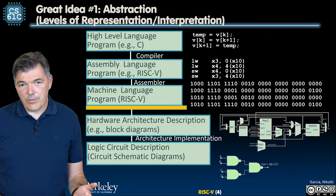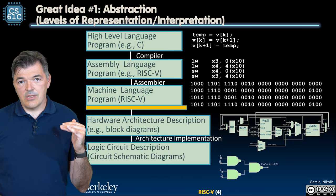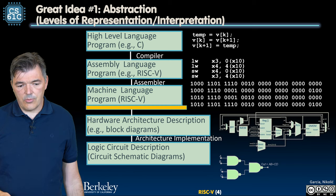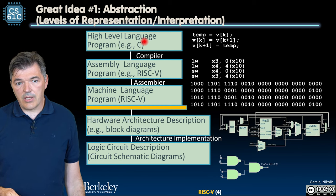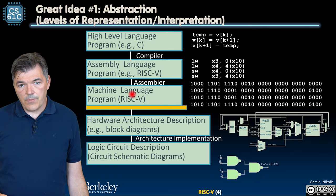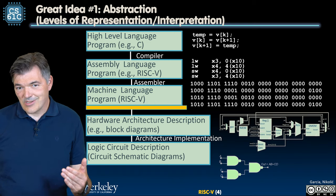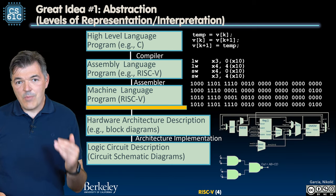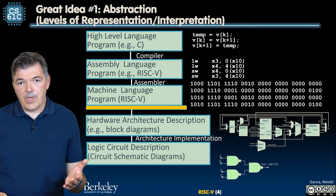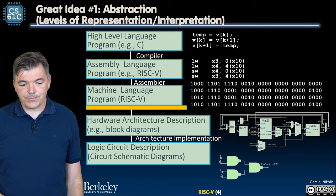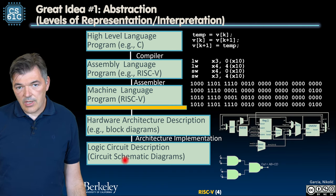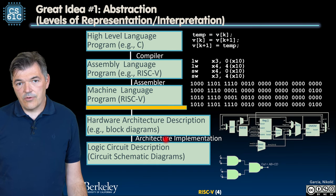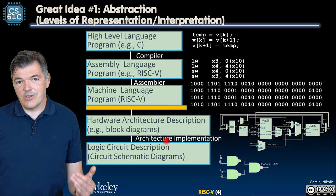One more reminder about the layers of abstraction. We started with C as an example of a high-level language, then talked about assembly language and the machine code that RISC-V executes. There can be many implementations of the RISC-V ISA, but they all have to execute that binary code. Out of the gates we have learned, we can build different implementations of RISC-V processors, and they should all be able to execute the same binary.